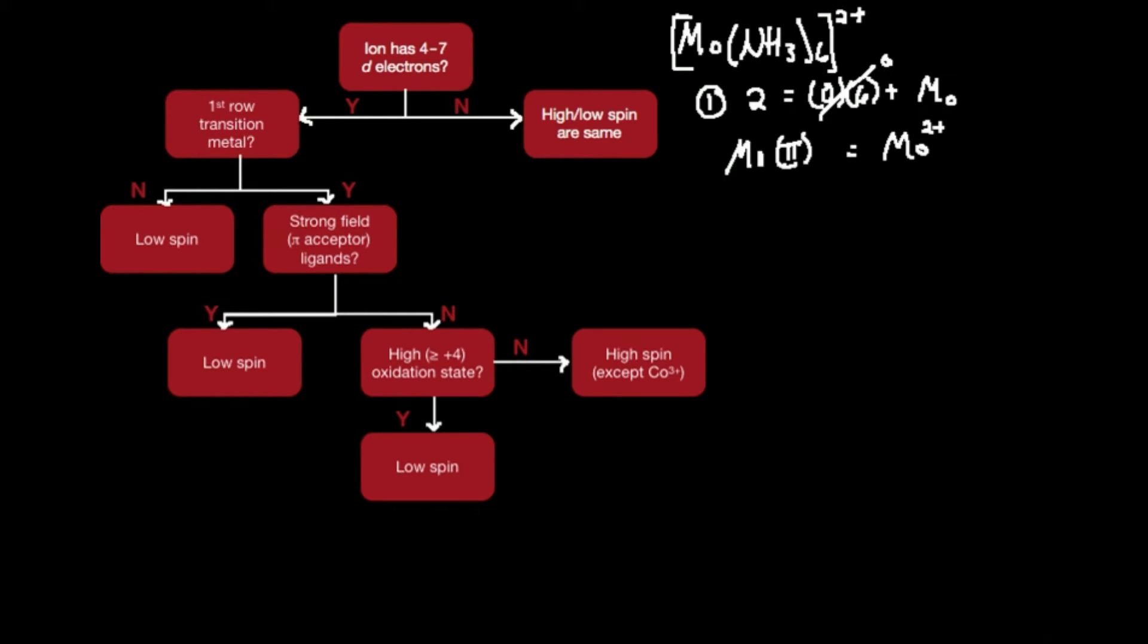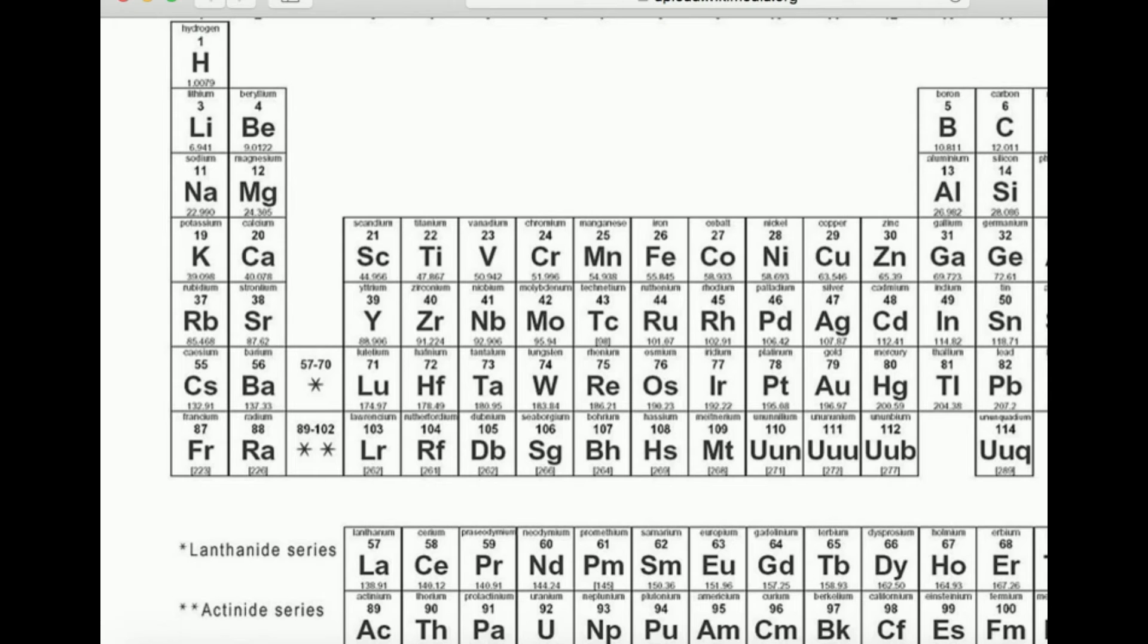Now the second step, I need to calculate the number of d electrons in molybdenum 2 plus. I'm going to go to the periodic table. Where is molybdenum? Here it is, number 42 on the periodic table.